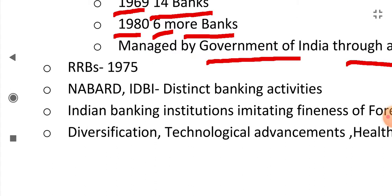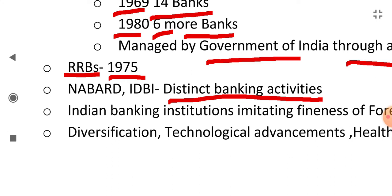Regional Rural Banks (RRBs) were established in 1975 for providing banking services in rural areas. For distinct banking activities like agriculture and industrial development, specialized banks were opened — like NABARD for agriculture activities and its promotion, and IDBI for industrial development and its promotion.